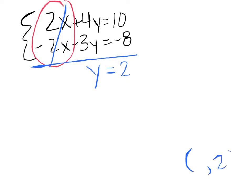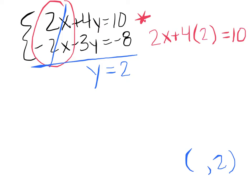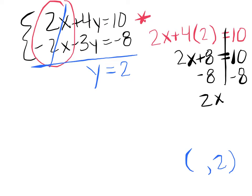I'm going to put the 2 in my ordered pair. Now, if you recall from when we were solving systems using substitution, to get the other variable we had to plug it back into one of the original equations. We have two to choose from, and I'm going to choose the top one because there are no negatives, and that's easier. So, 2x plus 4y equals 10. I already know y is 2, so plugging that in: 2x plus 8 equals 10. Subtract 8 from both sides to get 2x equals 2, then divide both sides by 2, so x equals 1.